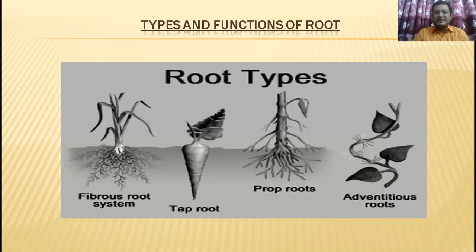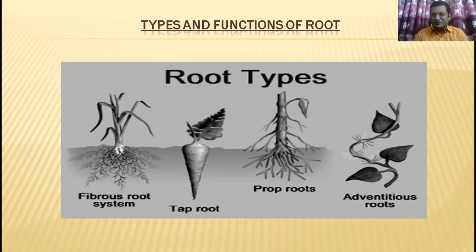Now, types and functions of root. Roots are of various types; examples include tap root system, fibrous root, and adventitious roots. The functions of roots: roots take all kinds of mineral salts and nutrients from the soil. Roots also maintain the balance and anchor the plant so it can stand upright.